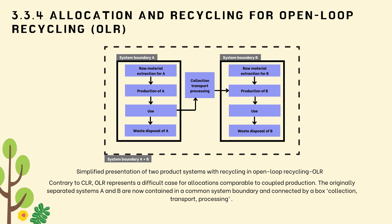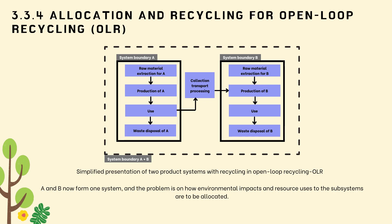Contrary to CLR, open-loop recycling (OLR) represents a difficult case for allocation, comparable to coupled production. The originally separated systems A and B are connected by a common boundary through collection, transport, and processing. The product in system A, after its use phase, can be fully or partially used as secondary raw material for production in system B. The problem is how to fairly allocate environmental impacts and resource uses to the subsystems. Typical secondary raw materials for OLR include waste paper and carton, waste glass, metal scrap, and thermoplastic polymers.